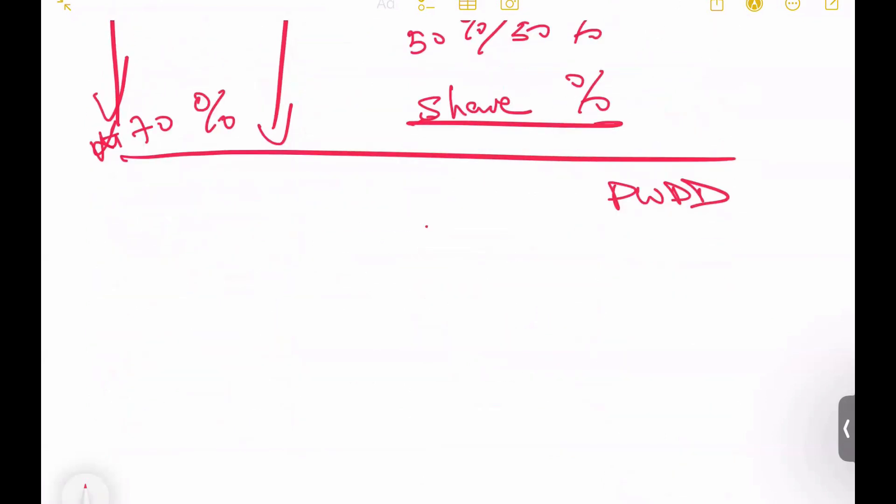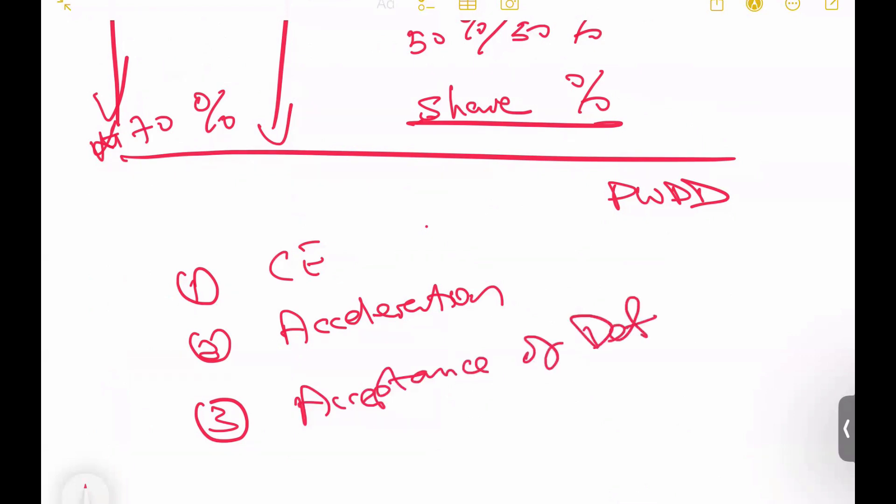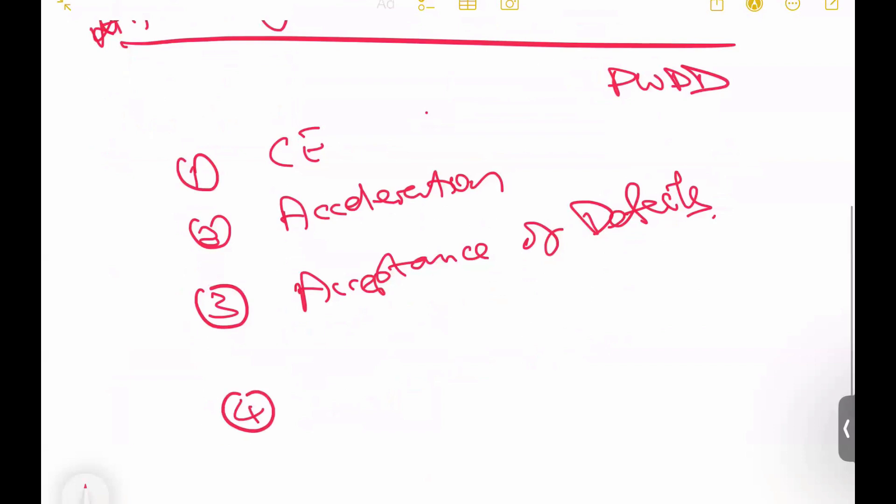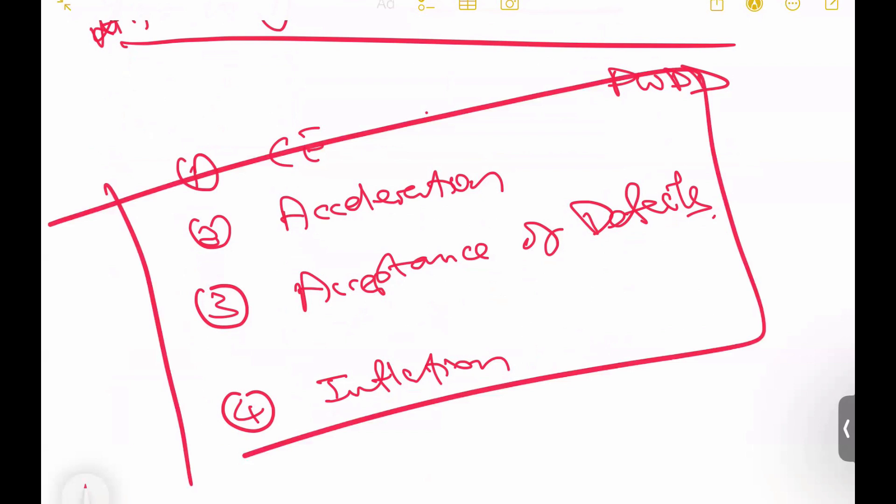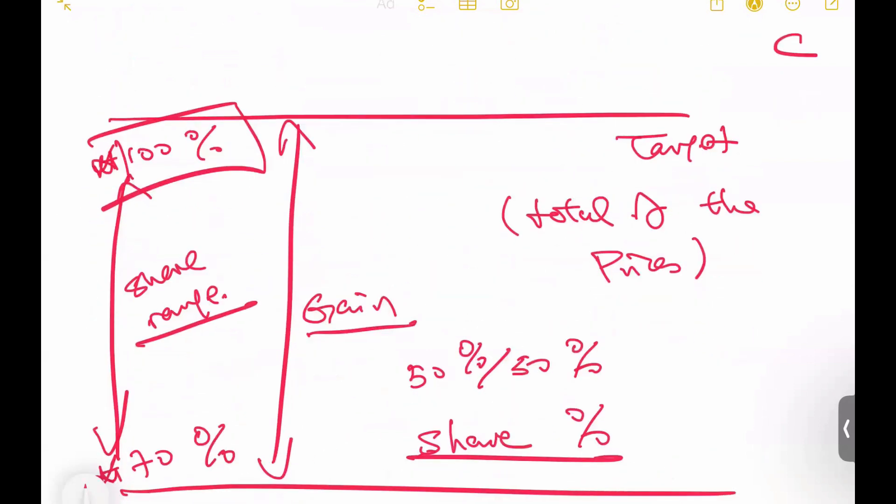By the way, the target, the total of the prices, can be moved by a number of things. There are three, potentially four. First one, compensation events. Second one, acceleration. Third one, acceptance of defects. The fourth one, we cannot control - inflation. Due to these four factors, the target will change. The total of the prices will change. Therefore, we need to express the share range as a percentage instead of some absolute number. That is the reason why.